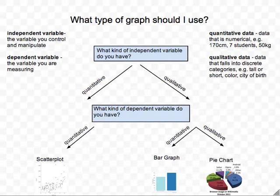Now, if your independent variable is qualitative, say boys versus girls, or tall people versus short people, and you have a quantitative dependent variable, so you're measuring something numerically about those categories, then you'd use a bar graph. If I'm measuring the heights of boys versus girls, I'd use a bar graph to represent that data.